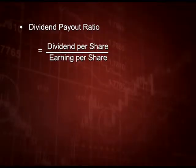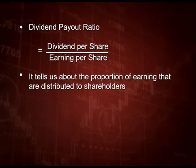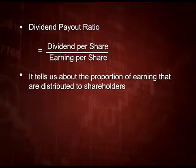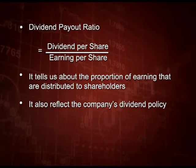The next ratio is dividend payout ratio. It is calculated by dividing dividend per share by earnings per share. It tells us about the proportion of earnings which are distributed to the shareholders. The company may be earning more but declaring less dividend, as they may have some future plans. It also reflects the dividend policy adopted by the management.